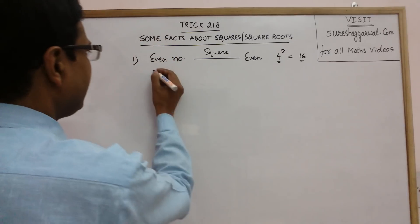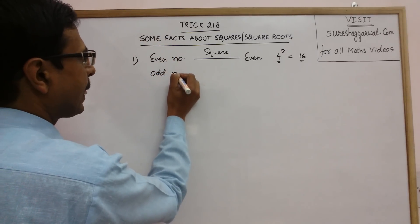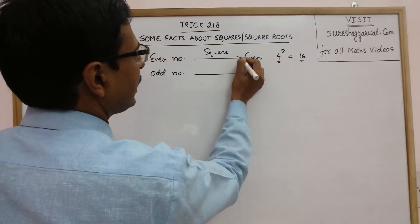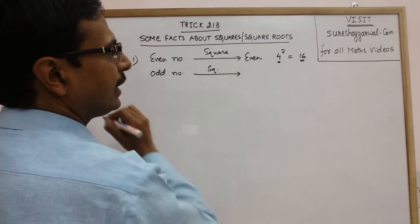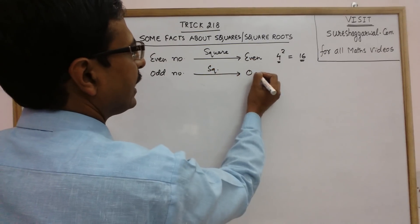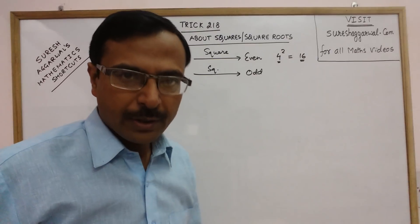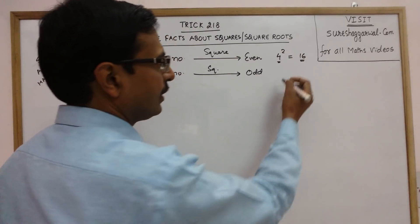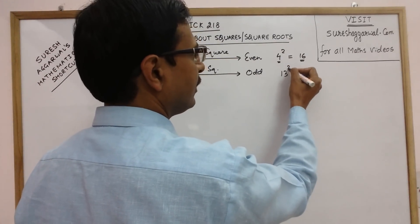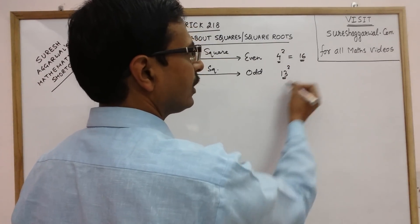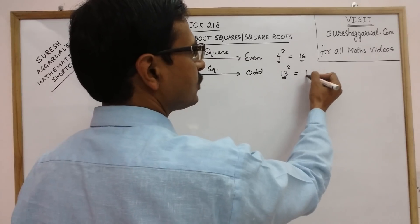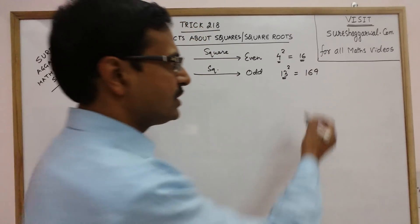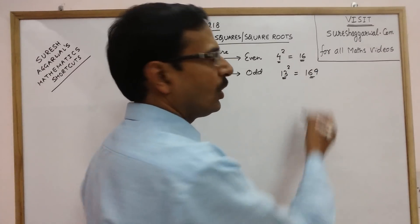Similarly, if you have an odd number and you try to square that number, then you will always get an odd number. For example, the square of 13 — 13 is an odd number — if you square this, you will get 169, which is again odd.